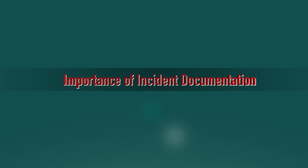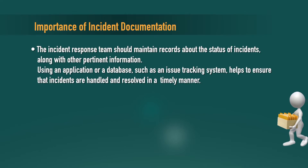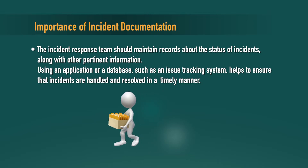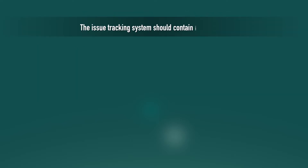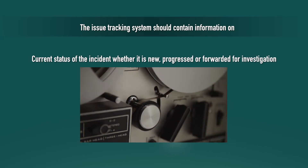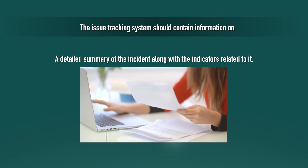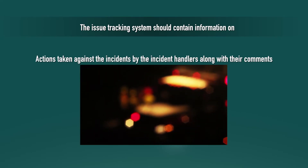The most important thing in incident handling is incident documentation. The incident response team should maintain records about the status of incidents along with other pertinent information using an application or database such as an issue tracking system. This can help ensure that incidents are handled and resolved in a timely manner. The issue tracking system should contain: the current status of the incident (whether new, progressed, or forwarded for investigation), and a detailed summary of the incident along with indicators related to it.